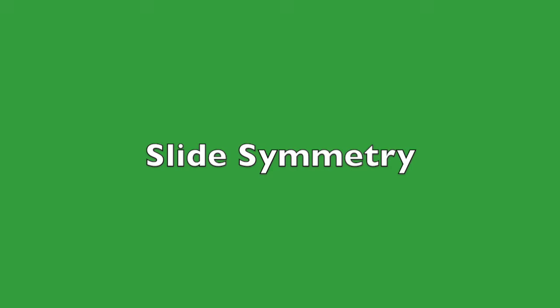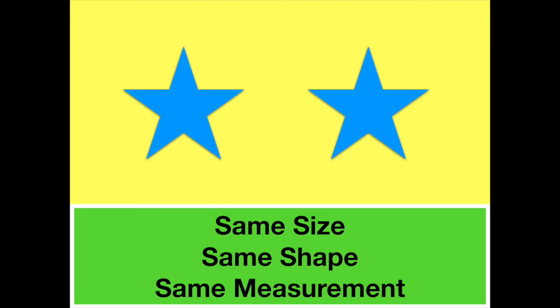So what is slide symmetry? Here are two stars. Notice how both stars are the same size, same shape, and same measurement. When we have two shapes that are the same size, same shape, and same measurement, we have symmetry.